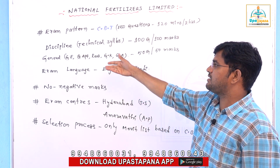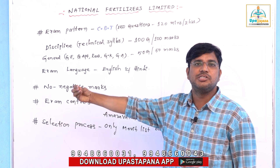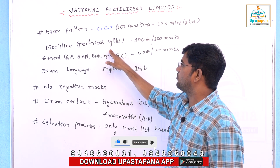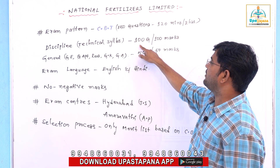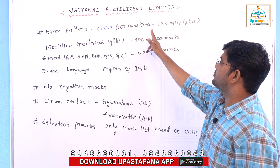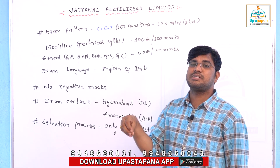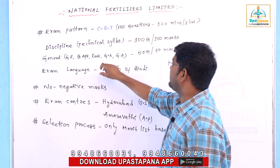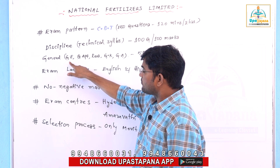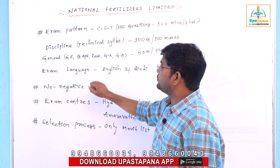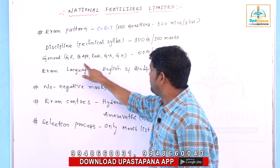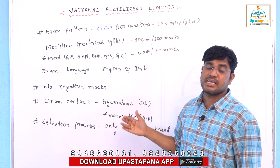You can divide the exam into two parts. The first part is the technical or discipline syllabus — 100 questions carrying 100 marks, with every question carrying one mark, in MCQ objective type format. The second part is General — including General English, Aptitude, Reasoning, and General Knowledge/General Awareness — with 50 questions and 50 marks. Total: 150 questions, 150 marks.